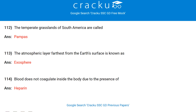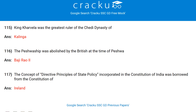The temperate grasslands of South America are called the Pampas. The atmospheric layer farthest from the earth's surface is known as the Exosphere. Blood does not coagulate inside the body due to the presence of heparin. King Kharavela was the greatest ruler of the Chedi dynasty of Kalinga. The Peshwaship was abolished by the British at the time of Baji Rao II. The concept of Directive Principles of State Policy in the Constitution of India was borrowed from the Constitution of Ireland.